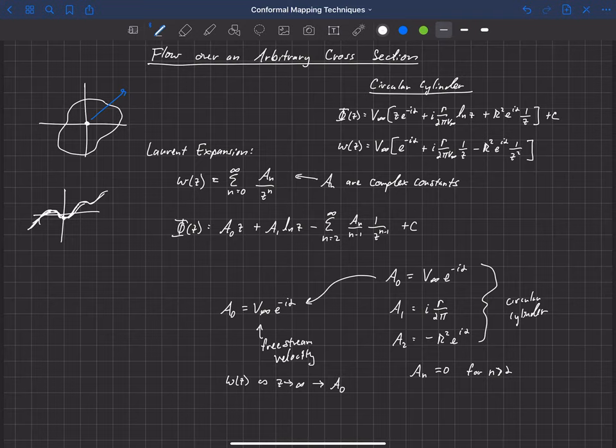And that will be true no matter what geometry we're trying to predict the flow over. So this is kind of an interesting take on being able to match the flow over arbitrary geometries. In this course, we're actually not going to spend much more time on that. We're going to use a conformal mapping technique instead, but it is interesting to know that you can use this Laurent series in order to match more complex geometries.